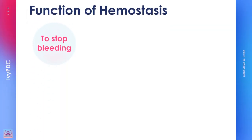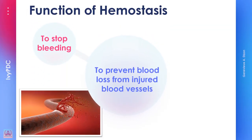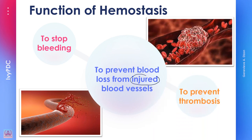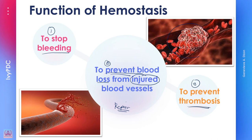Hemostasis is the body's natural reaction when there is injury. It functions to stop the bleeding and to prevent any blood loss. This reaction also helps the body repair any damages done in the injury, and lastly, hemostasis also prevents the occurrence of thrombosis inside the blood vessels.